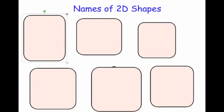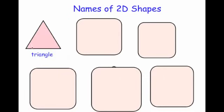So let's start off by looking at a polygon which has got three straight sides, and that would be a triangle.